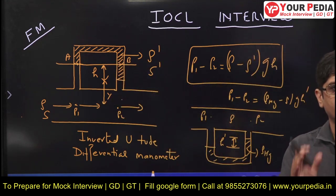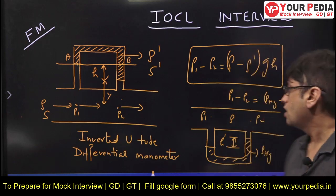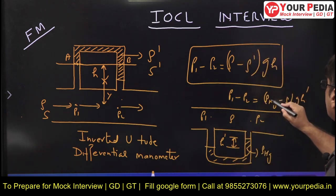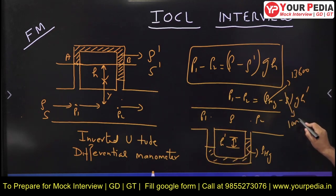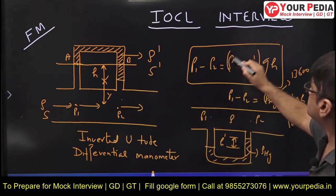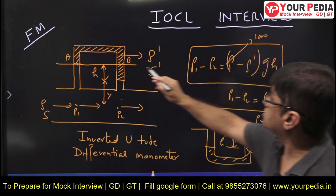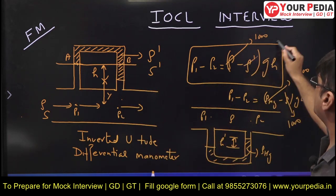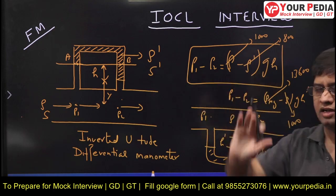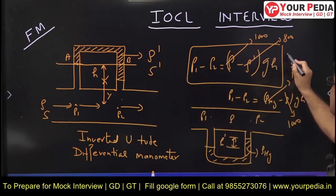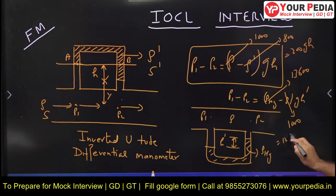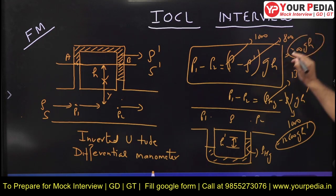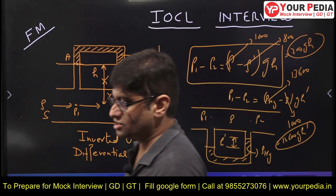Let us compare the two numerically. The density of mercury is 13,600 kg/m³ and the density of water is 1,000 kg/m³. If an oil with density 800 kg/m³ is used as the manometric liquid in an inverted U-tube, the sensitivity factor is (1000 - 800)*g*h = 200*g*h. For a U-tube with mercury, it is (13600 - 1000)*g*H_dash = 12,600*g*H_dash.